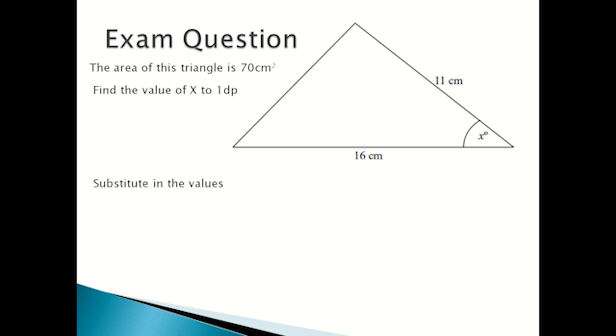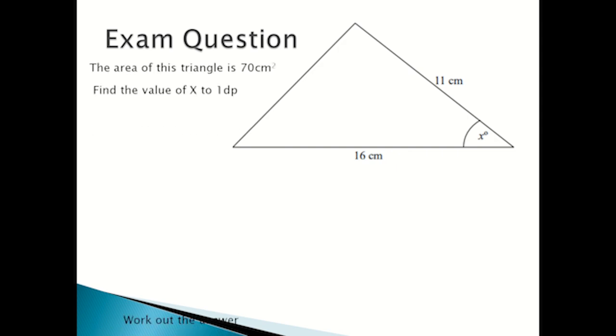Next you substitute in the values, so sine c equals a over a half a b, which becomes sine c equals 70 over a half times 11 times 16. But when you put this into a calculator, you have to do the inverse function, which would be sine to the minus one. So it would be sine to the minus one in brackets, 70 divided by a half times 11 times 16.